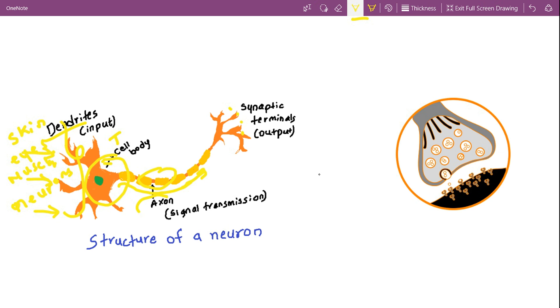The axon can be of any length. It can be short or it can be long. It can even extend from your brain to the tip of your toe.